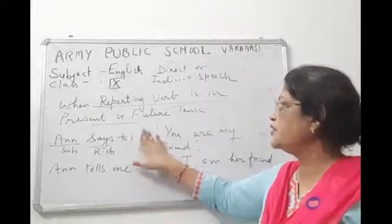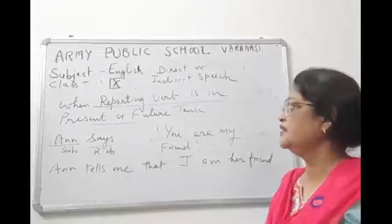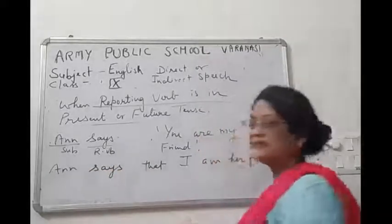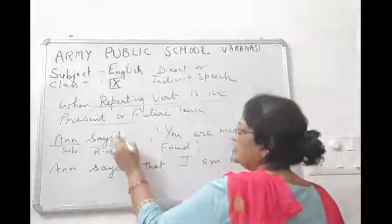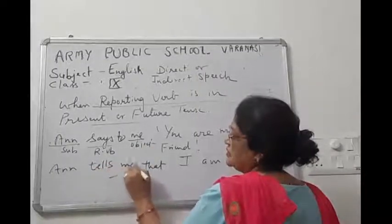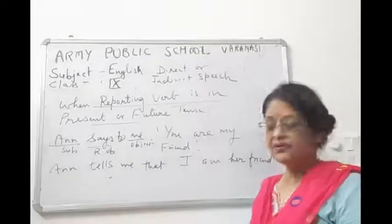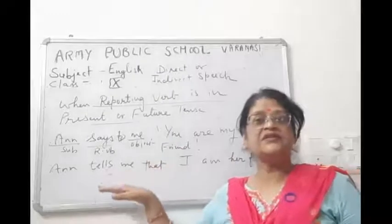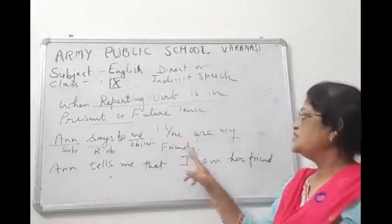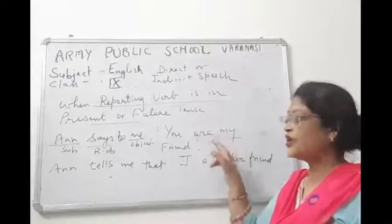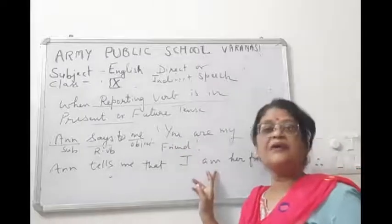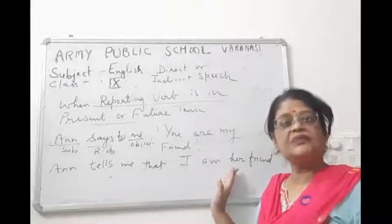If object is not present — imagine 'me' is not there — then 'tells' will not come, it remains 'says'. Since 'to me' is the object, if object is there it changes to 'tells' and you also remove 'to'. The pronoun 'you' is changed to 'I' and 'my' is changed to 'her'. The verb 'are' changes automatically to 'am' because we use 'am' with 'I'.